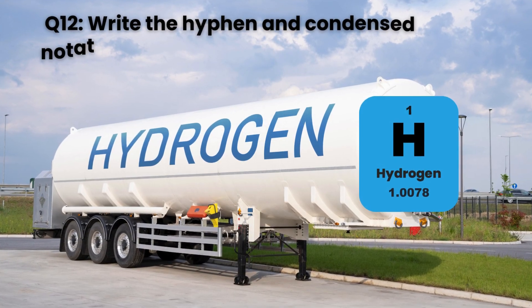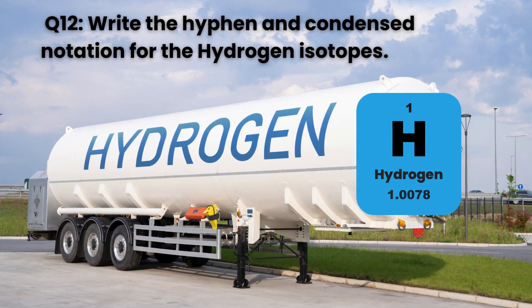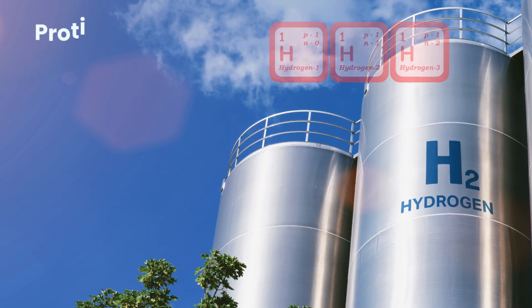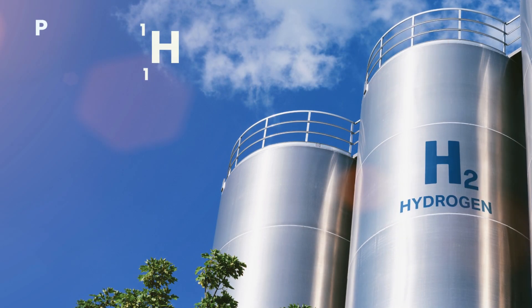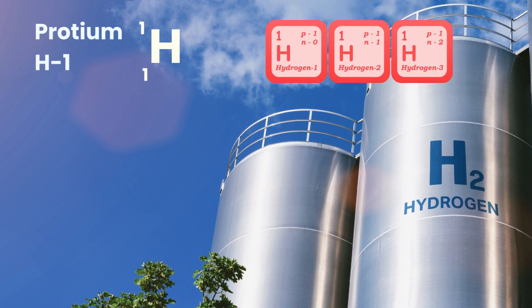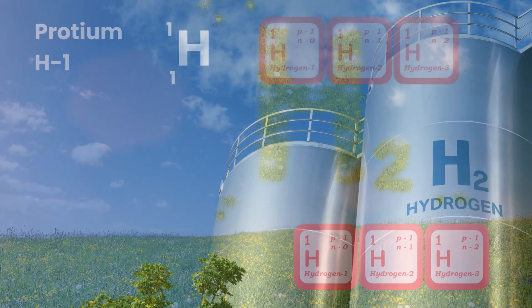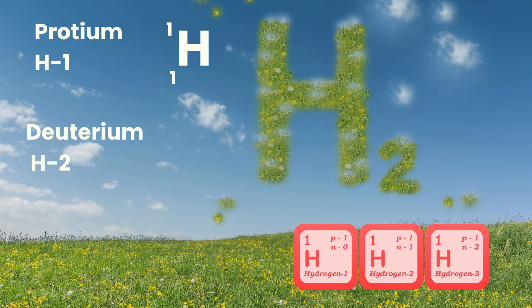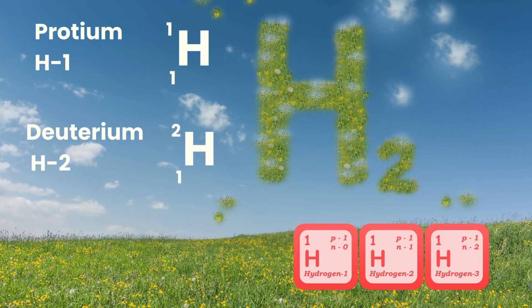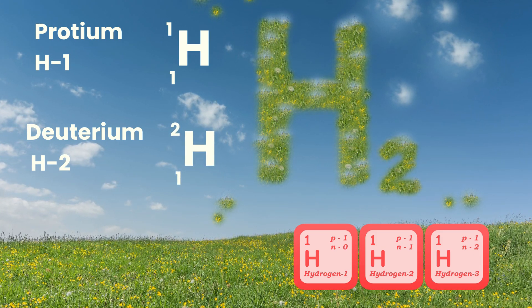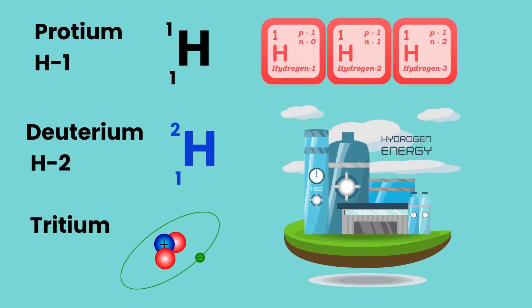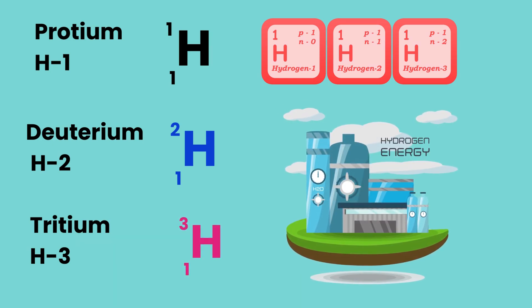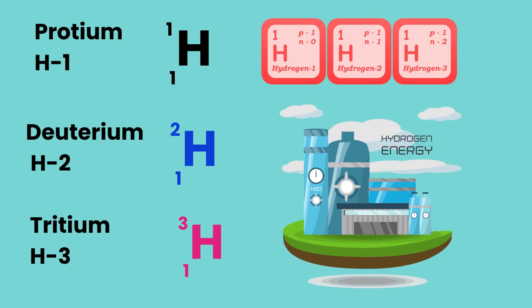Question 12: Write the hyphen and condensed notation for the hydrogen isotopes. Protium has one proton and zero neutrons, so it is hydrogen-1; condensed notation is H with left subscript 1 and left superscript 1. Deuterium has one proton and one neutron, so it is H-2; condensed notation is H with left subscript 1 and left superscript 2. Tritium has one proton and two neutrons, so it is H-3; condensed notation is H with left subscript 1 and left superscript 3.